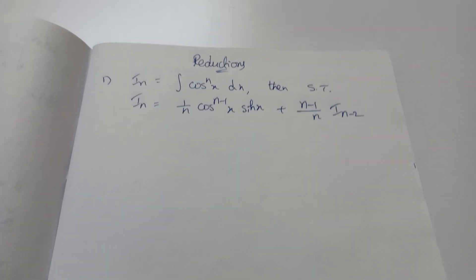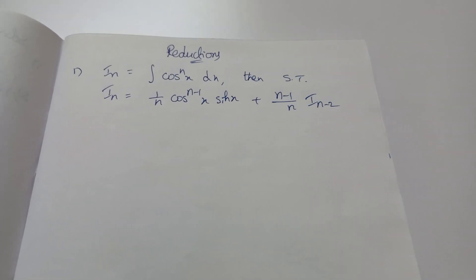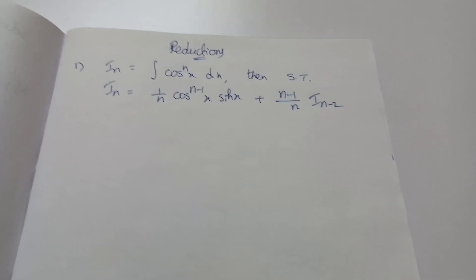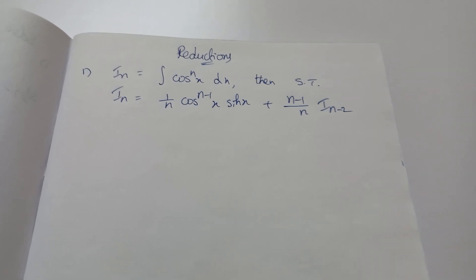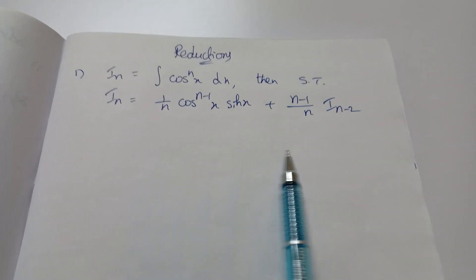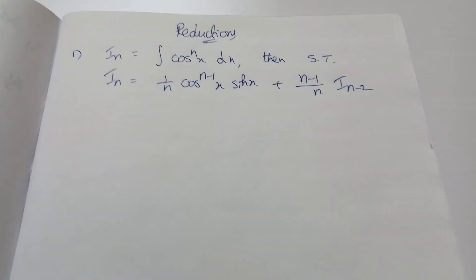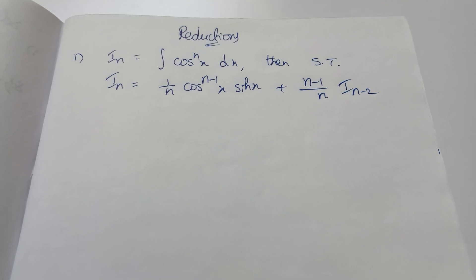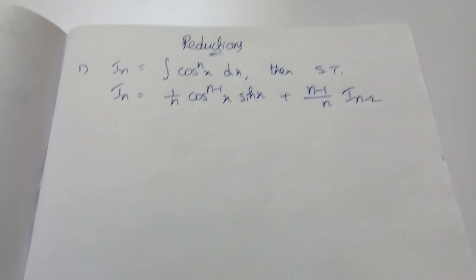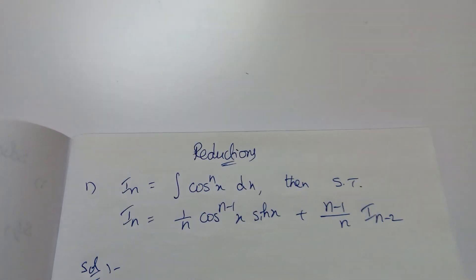Welcome back to my channel. Today we are doing reduction formulas for the six trig functions — sine, cos, tan and the reciprocals cosecant, secant, cot. I already posted the remaining functions. Now I am explaining integration of cos^n x dx. These reduction problems are compulsory — one question will definitely come, so you should prepare all six functions and know how to prove them.